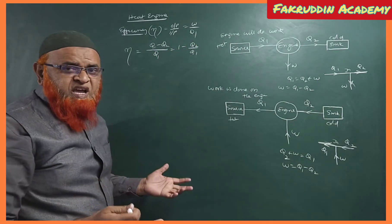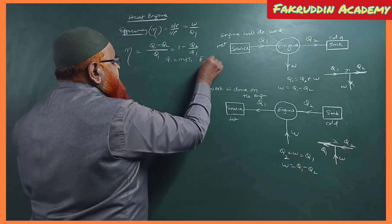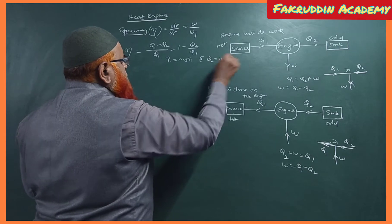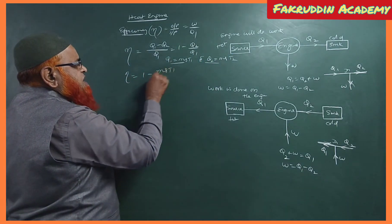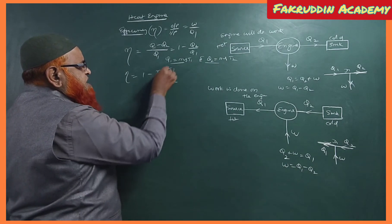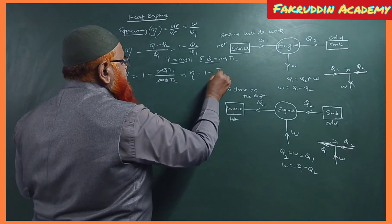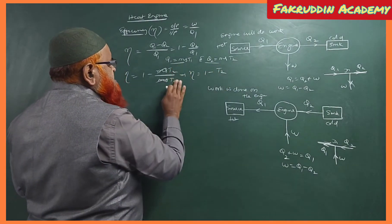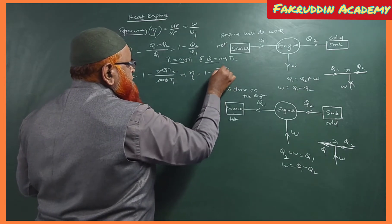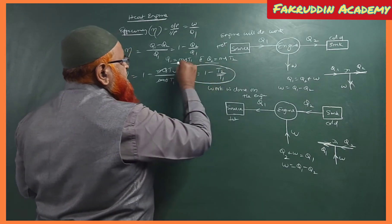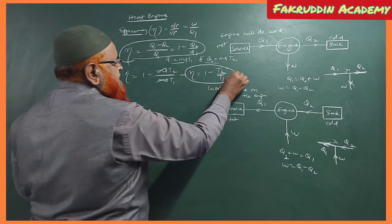We know that Q1 = msT1 and Q2 = msT2. Substituting these values into the efficiency formula η = 1 − Q2/Q1, we get η = 1 − msT2 / msT1. The ms terms cancel, giving us efficiency η = 1 − T2/T1. So the first formula is η = 1 − Q2/Q1 and the second is η = 1 − T2/T1.